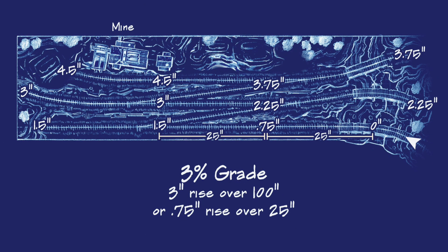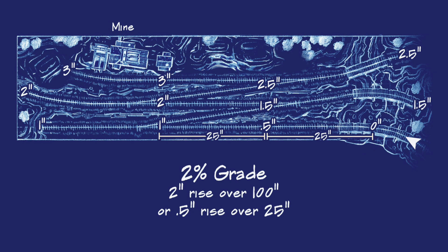Just for fun, here's the same example using a 3% grade — now we climb just three-quarters of an inch for every 25 inches traveled, winding up 4.5 inches higher than where we started. Then, with a 2% grade, we climb just one-half an inch for every 25-inch-long run — much easier on the equipment, but only arriving at half the height of the 4% example.